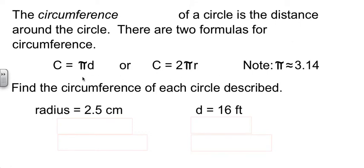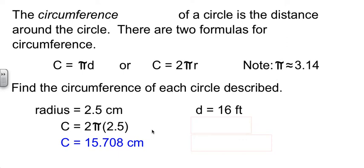So which formula should we use? Well, it really kind of depends on the information I have. They told me the radius in the first problem, so I'm going to use the 2 pi R version of the formula because it involves radius. 2 times pi times 2.5. Punch that through my calculator and I believe I used the pi button when I did that and got 15.708.